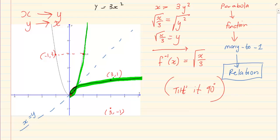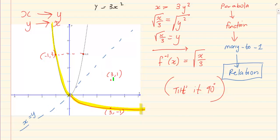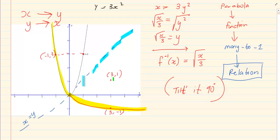Now if we take the other part — ignoring the first line and looking at the yellow — if you fold it on the x equals y line, this yellow would fold exactly onto the other yellow. So it is always reflecting on the x equals y line.